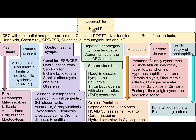After performing history and physical examination, patients need a complete blood count with differential and peripheral smear. Consider PT, PTT, liver function test, renal function test, urinalysis, chest x-ray, C-reactive protein, ESR, quantitative immunoglobulins, and IgE.